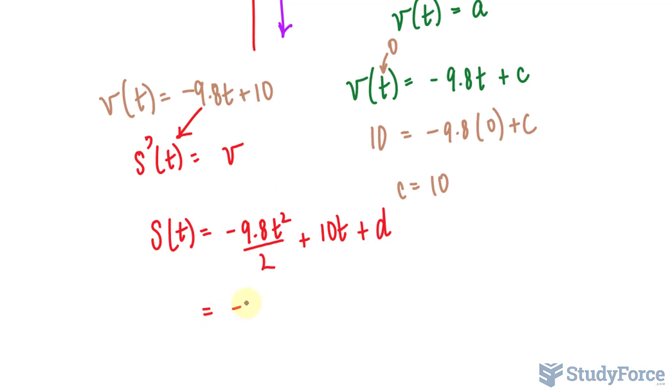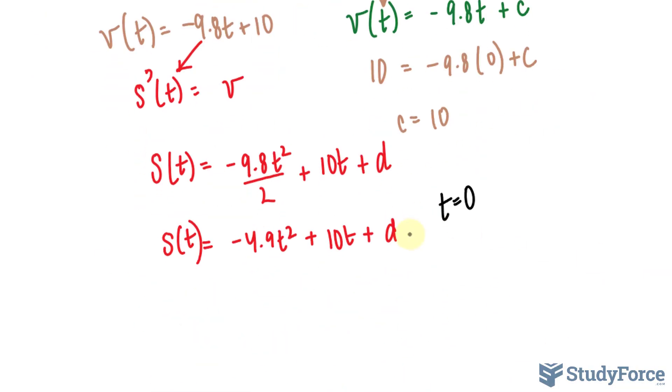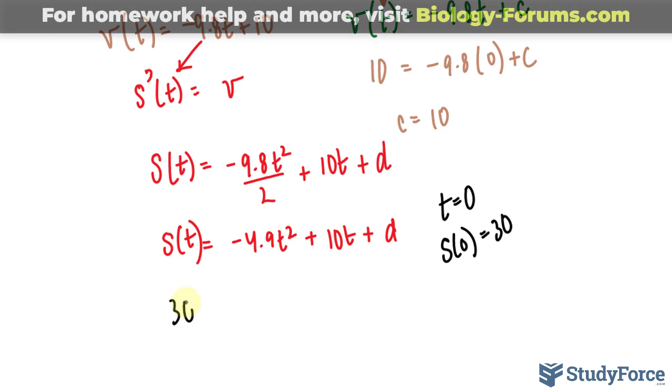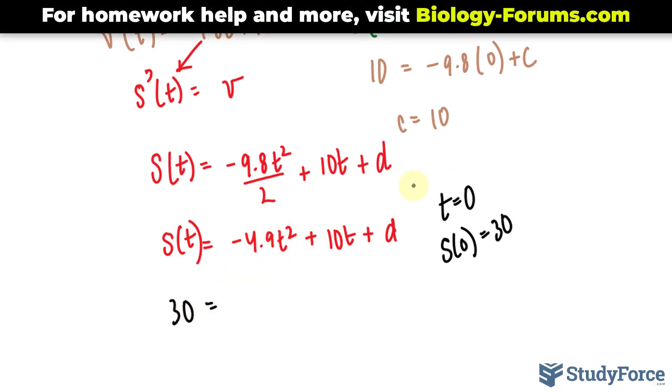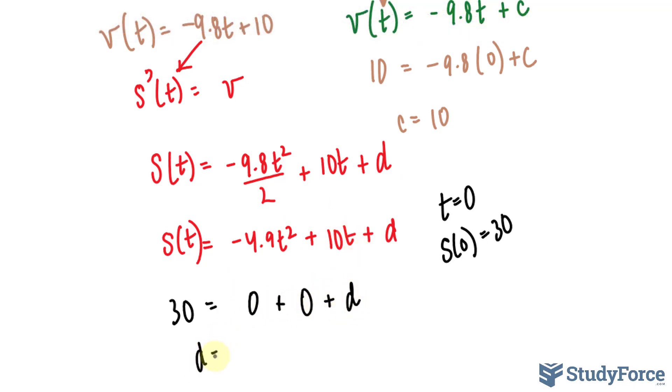This reduces down to negative 4.9t squared plus 10t plus d for s of t. Remember, at time 0, the displacement is 30 meters, and that was given in the question. So s at 0 is equal to 30. Placing that into here, we have 30 is equal to negative 4.9 times 0, that's 0, plus 10 times 0 is 0, plus d. Therefore d is equal to 30. And now we can put together the function that gives us the displacement with respect to time: negative 4.9t squared plus 10t plus 30.